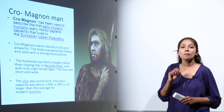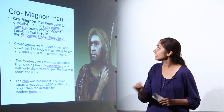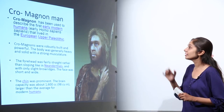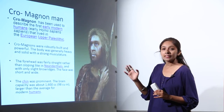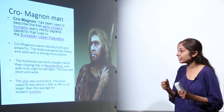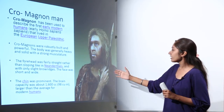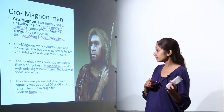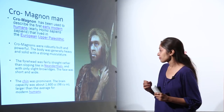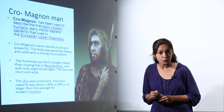Next we have the Cro-Magnon man, used to describe the first early modern humans — the early Homo sapiens sapiens that lived in the European upper Paleolithic. Cro-Magnons were robustly built and powerful, with a generally heavy and strong body with strong musculature. The forehead was fairly straight rather than sloping like in Neanderthals, with only slight brow ridges, a short and wide face, and a prominent chin. The brain capacity was about 1600 cc, larger than the average for modern humans.